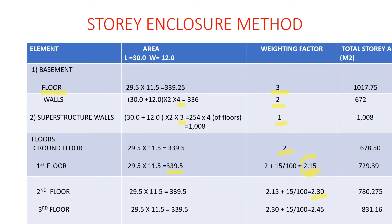For the third floor, we again use the internal dimension: 29.5 × 11.5 = 339.5 square meters. The weighting factor becomes 2.30 + 15% = 2.45. So 2.45 × 339.5 = 831.16.